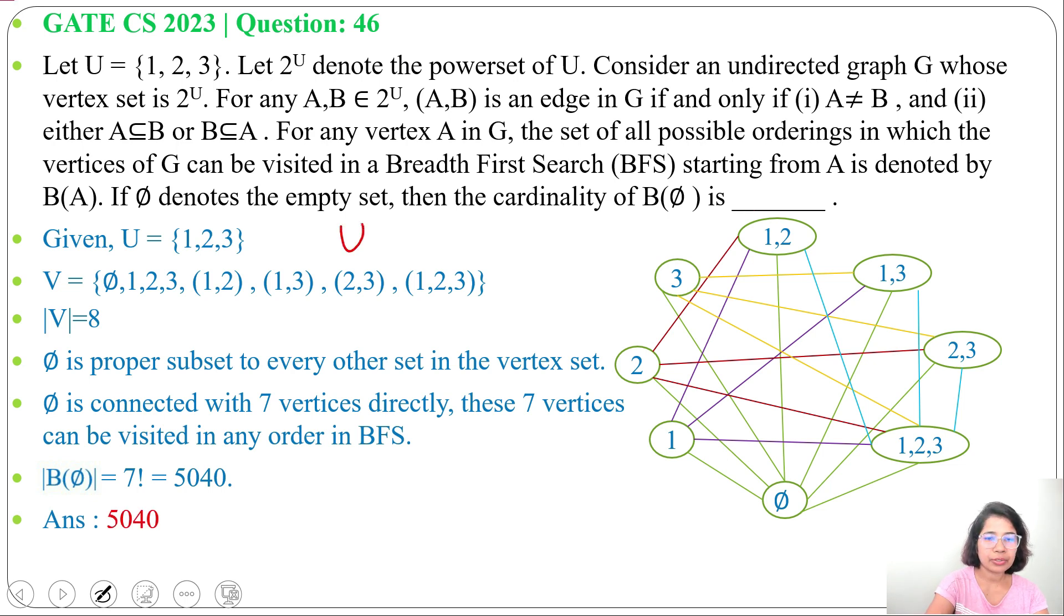|U| equals 3. 2^U is 2^3 = 8. Except φ, there are 7 vertices. φ is subset of every other vertex. So φ is connected with 7 vertices. That's why 7 factorial ways we can traverse in BFS.